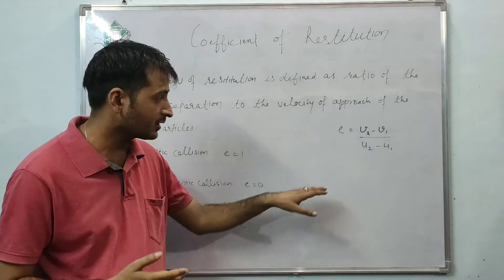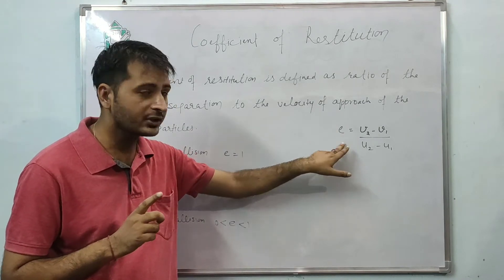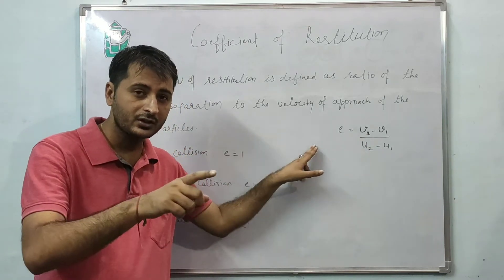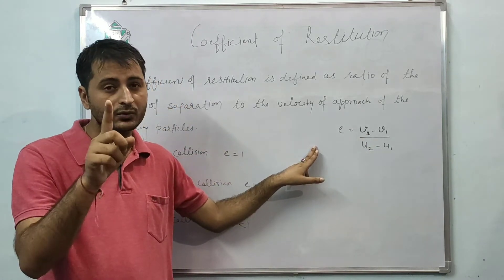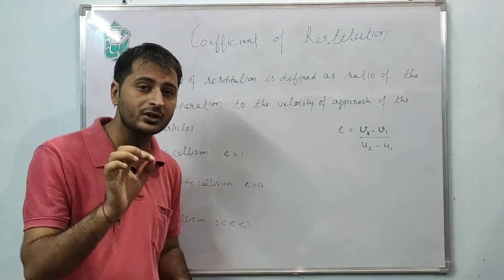Mathematically explaining it, if the value of e is one, we can rearrange the equation: u2 minus u1 equals v2 minus v1. Recall the derivation of elastic collision in one dimension.